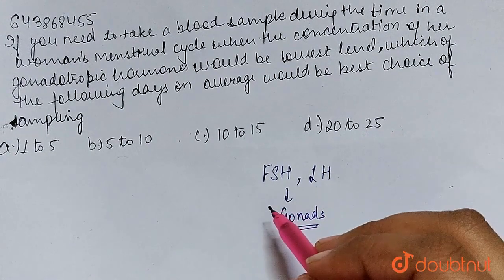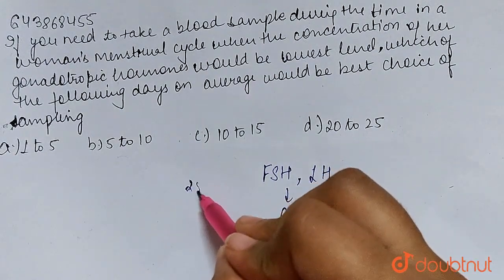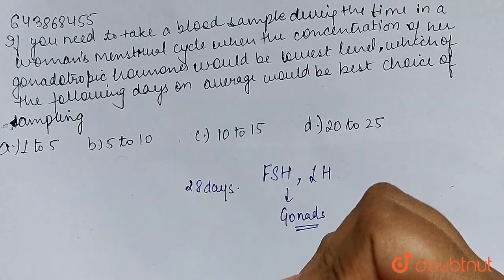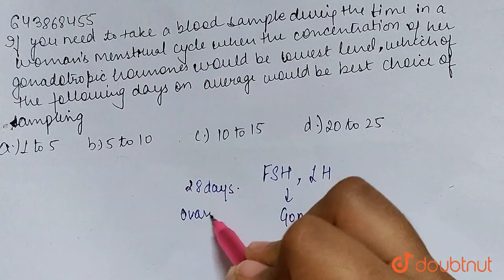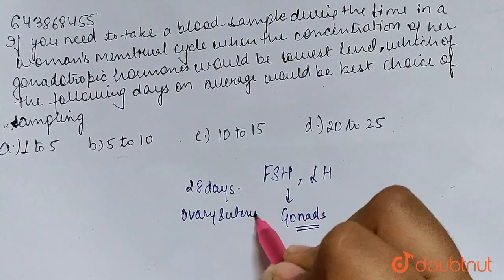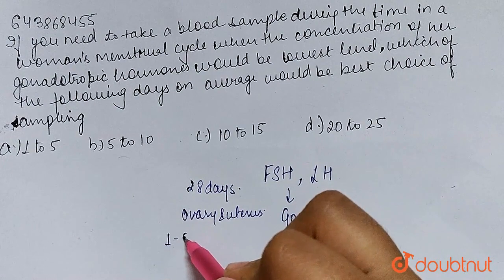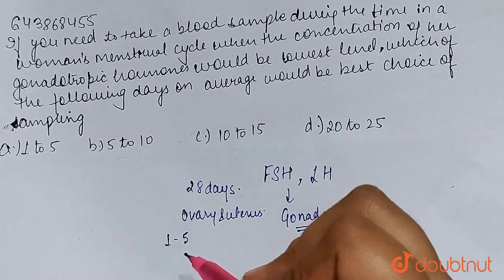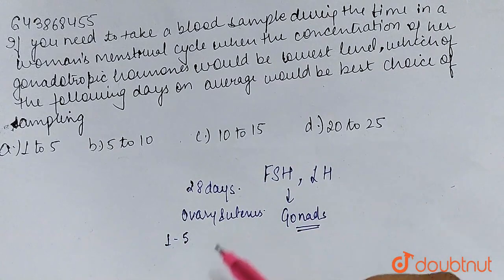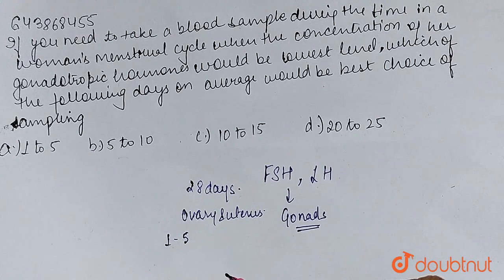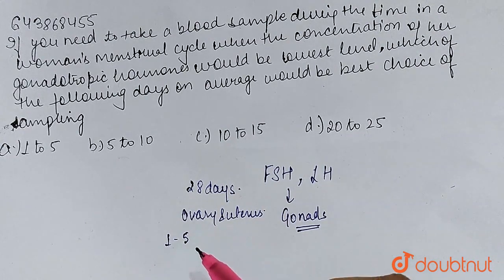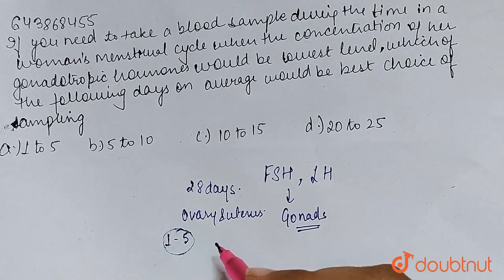So guys, if we talk about this — the women's menstrual cycle is 28 days, where there are changes in the ovary and uterus. Days 1 to 5 is menstruation, which is bleeding. Basically, every month the uterus is prepared for implantation, so the lining becomes thick and cushion-like. If there is no fertilization or implantation, the lining breaks and exits the female body in the form of blood.